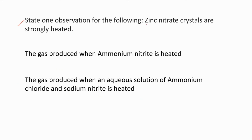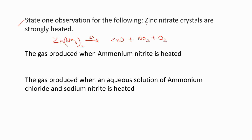Next question: state one observation when zinc nitrate crystals are strongly heated. When zinc nitrate is heated, you get zinc oxide, nitrogen dioxide, and oxygen gas. Either you can say: a reddish brown gas will be evolved out of the test tube. Or you can speak about zinc oxide: the residue obtained at the bottom of the test tube will be white in color when cold, and yellow in color when hot.